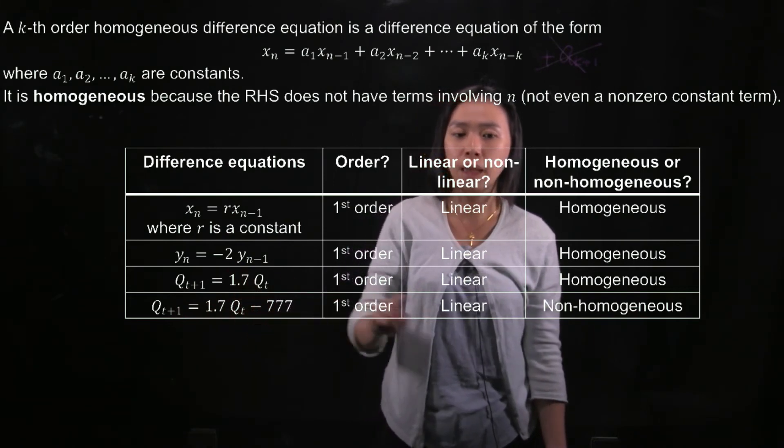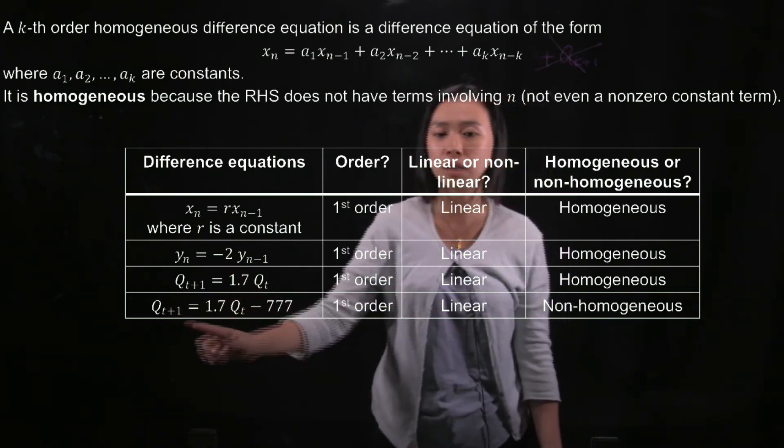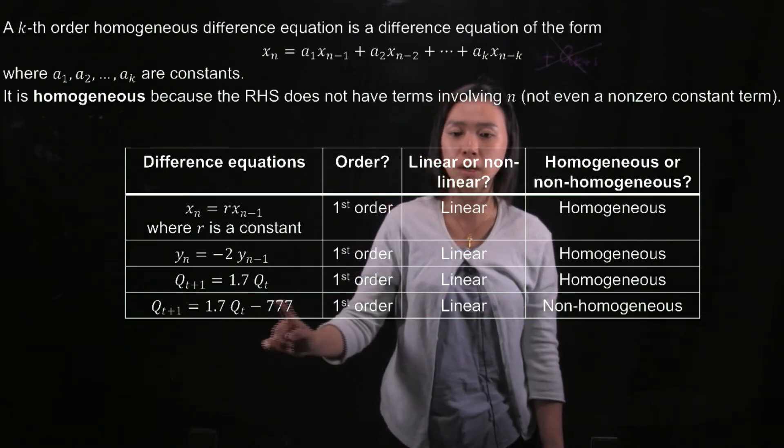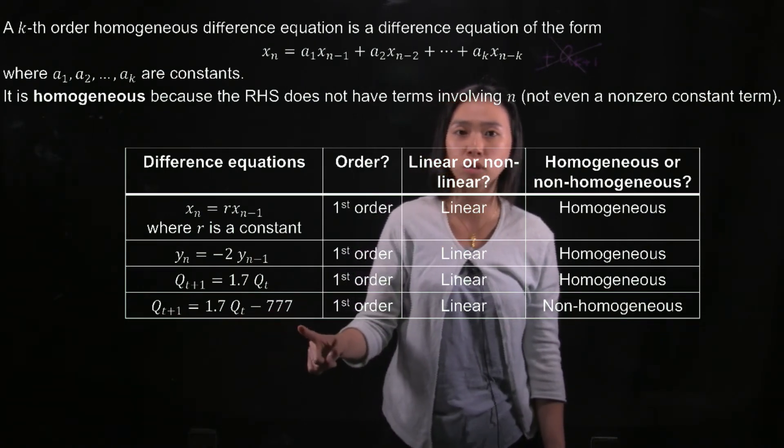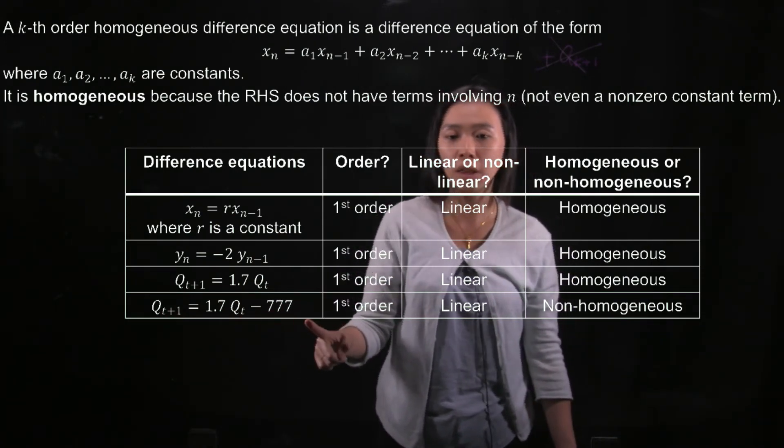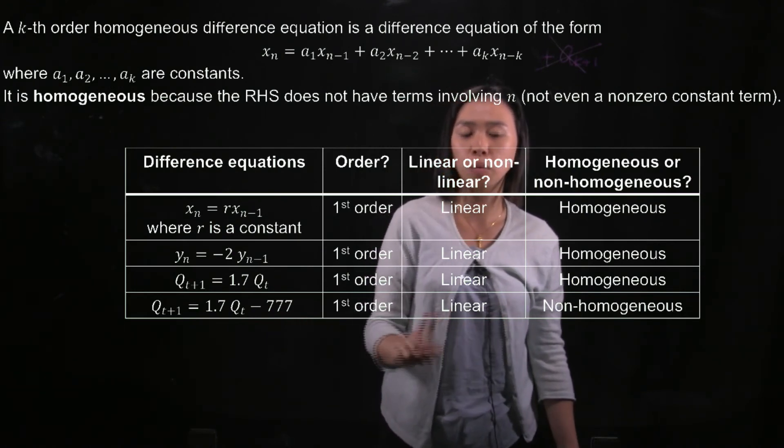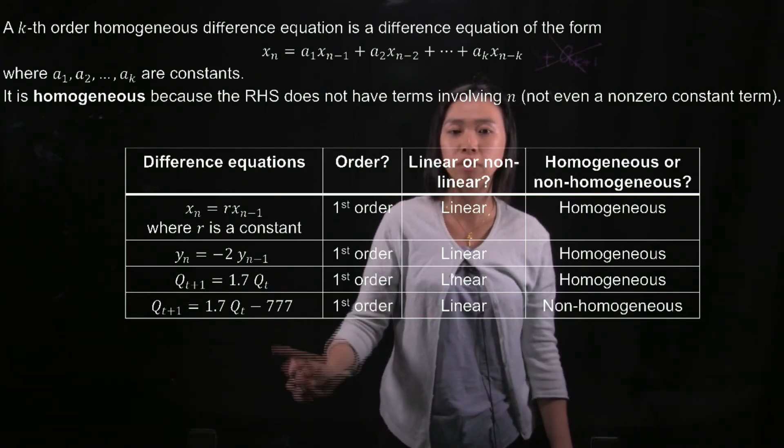But it is non-homogeneous because in this equation, at the end, you got a non-zero constant term, negative 777. So this is a non-homogeneous linear first-order difference equation.